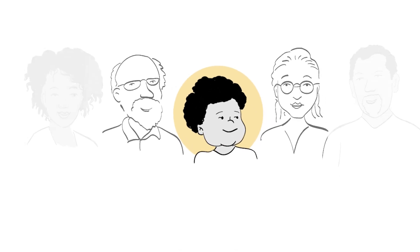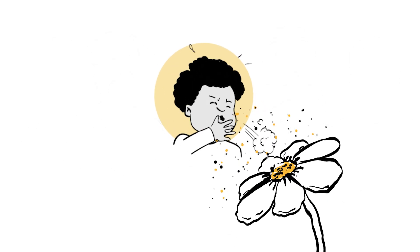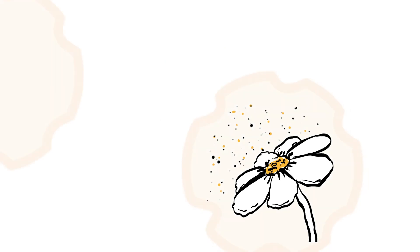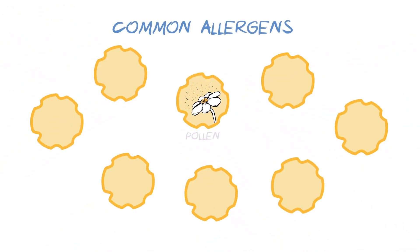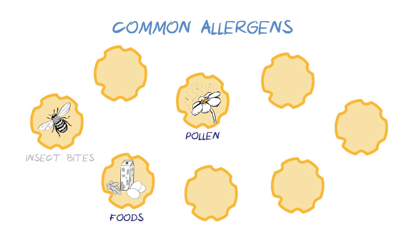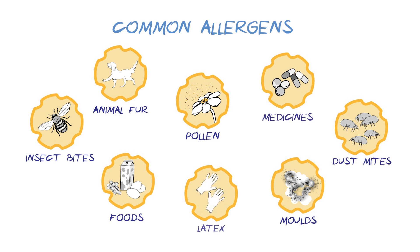Allergy occurs when our body becomes sensitive to a substance, called an allergen, that is harmless to most people. Common allergens include pollen, which causes hay fever, certain foods such as nuts, milk and eggs, insect bites such as bee and wasp stings, dust mites, moulds, animal fur, some medicines, and certain materials such as latex.